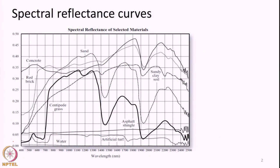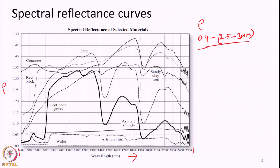While discussing the interaction of EMR with earth surface features, I introduced you to the concept of the spectral reflectance curve. A spectral reflectance curve is nothing but a recording of the wavelength and the spectral reflectance observed at the corresponding wavelength. As shown in this slide, the x-axis has wavelength and the y-axis has reflectance. If we plot this for various wavelengths in the range of about 0.4 up to 2.5 or even 3 micrometers, we call this plot a spectral reflectance curve.